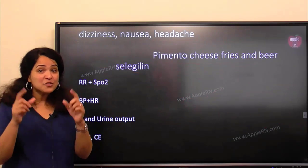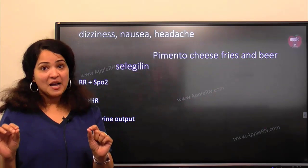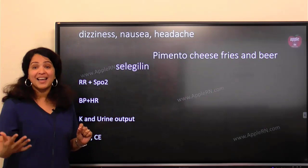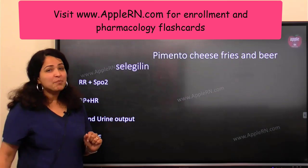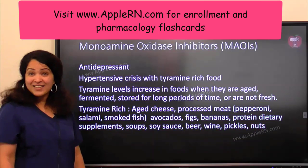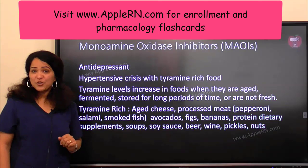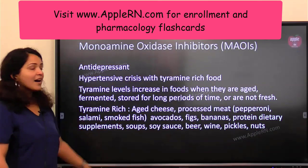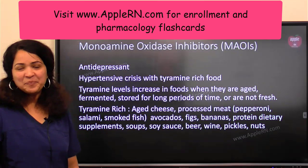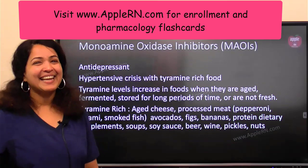I hope that helped you make those connections with critical thinking, because that is what you need to pass the exam — not memorization, but understanding and applying content the right way. For your notes: selegiline is one of the monoamine oxidase inhibitors that can cause hypertensive crisis with tyramine-rich food. Pay attention to the most common tyramine-rich food items. Take care and God bless you.